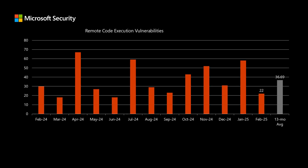Next, I'll talk to remote code execution vulnerabilities. These are the ones that typically provide the most risk — they will allow a threat actor to install software and other high-level activities. We've been averaging almost 37 of these per month, 36.7. This month, there are 22 remote code execution vulnerabilities in this month's release.